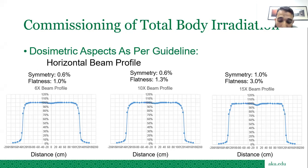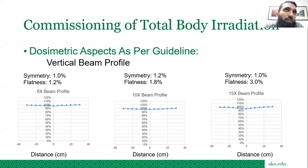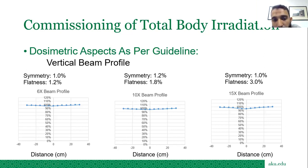For vertical beam profile, we measured 30 cm upward and 30 cm downward from the CAX, giving 60 cm total — sufficient since no patient has separation greater than 60 cm. For 6X, flatness was 1.2%; for 10X, flatness was 1.8%; for 15X, flatness was 3% and symmetry was 1%. This completes the vertical beam profile data.